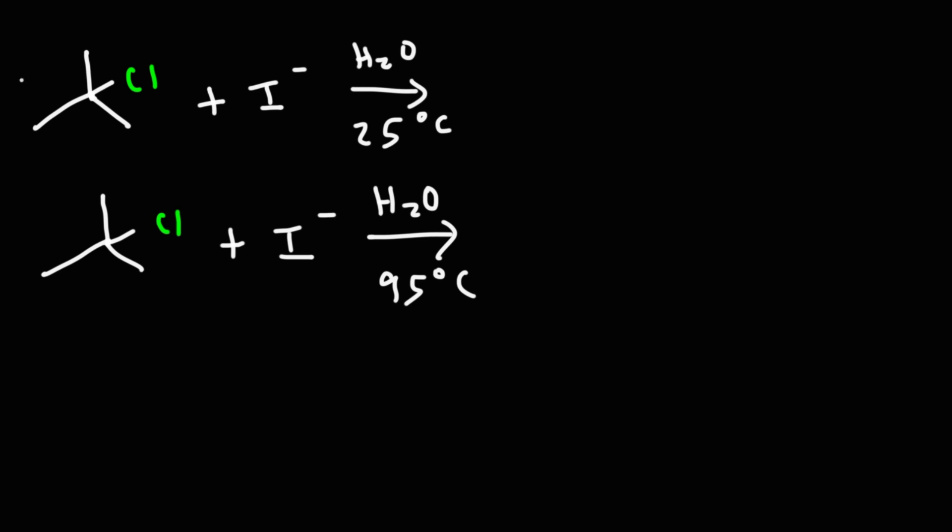In both cases we're dealing with a tertiary alkyl halide, so we're not going to get the SN2 reaction — the substrate is too sterically hindered for that. We also don't have a strong base. Iodide is a good nucleophile but a very weak base. Water is a better base than iodide, so water will be the weak base and iodide is the good nucleophile. Because we don't have a strong base, we're not going to get the E2 reaction.